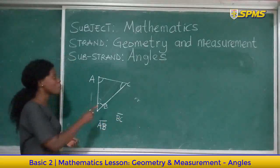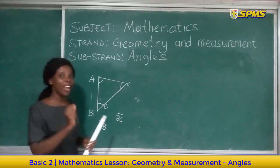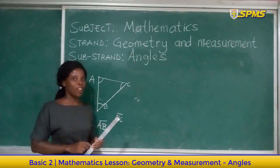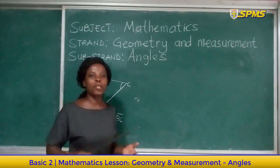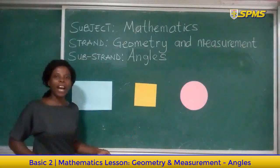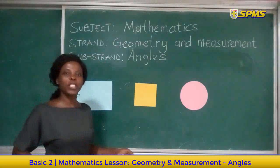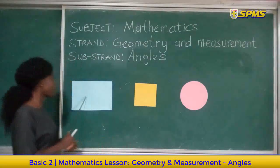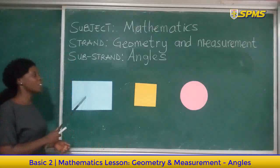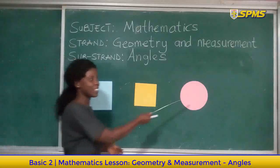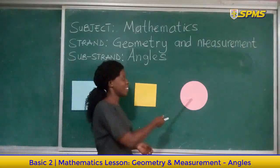Let us see more examples of angles in the other shapes. Now I have other examples of 2D shapes on the board. Let's identify them. Rectangle, good. Square. Circle.